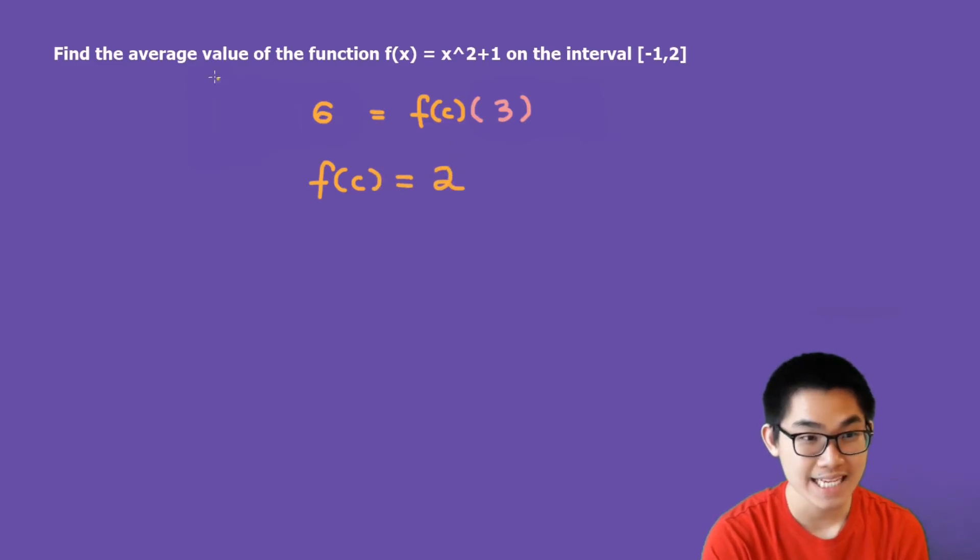2 is the average value of this function. So if the problem wants you to find where the average value occurs, then they're asking for the value of c. Okay, so let's assume they ask for c. What is c going to be?